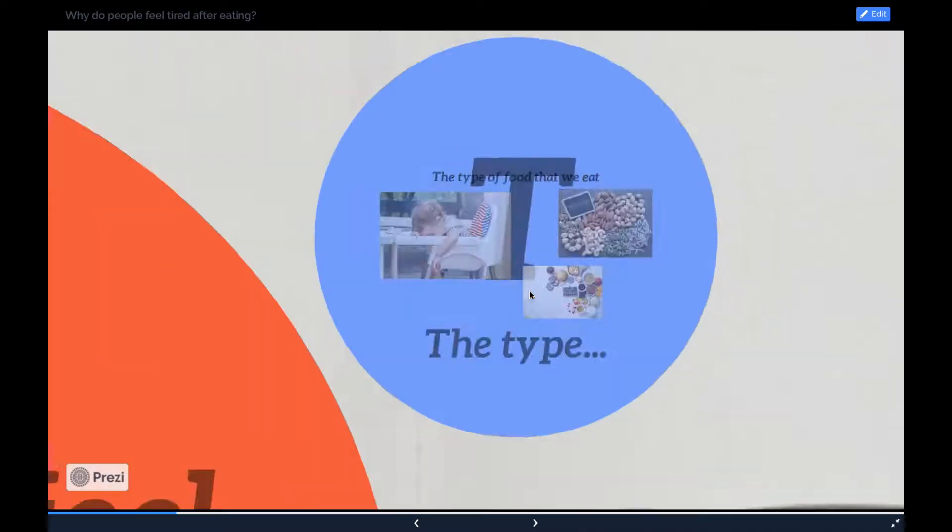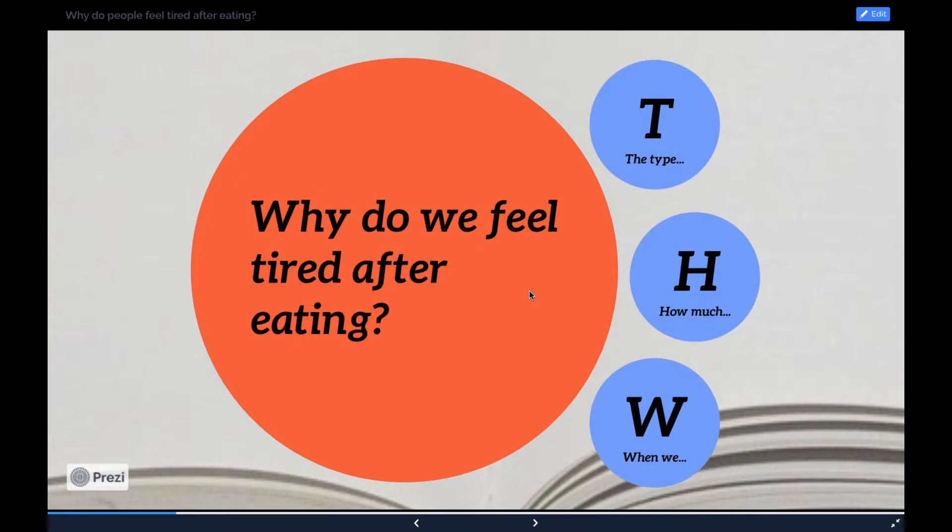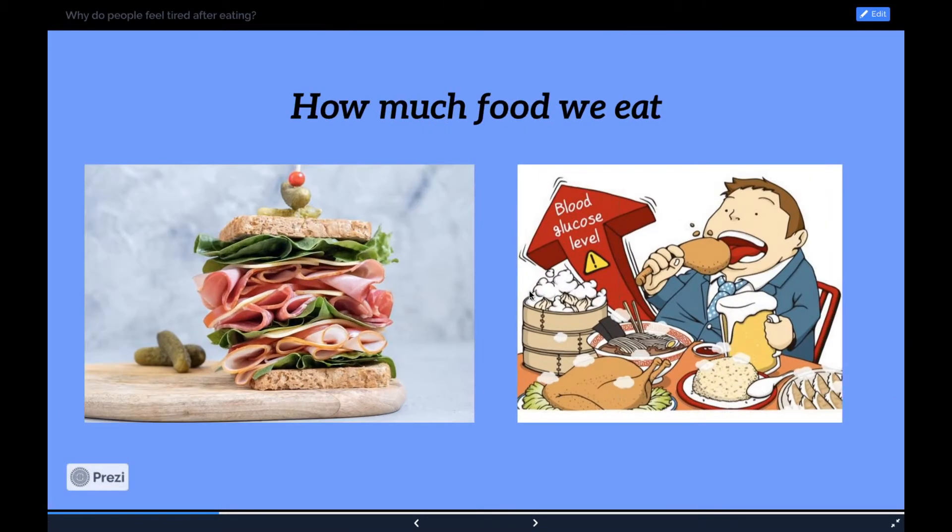Reason number two: how much food you eat. A person may be likelier to experience postprandial somnolence after a large meal. People who eat larger lunches may experience more of an afternoon slump than those who eat less at midday. Eating causes blood sugar to rise and a dip in energy may follow. So there's a rise and there's a dip that can contribute to us feeling tired.